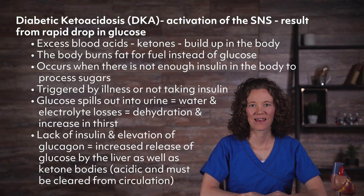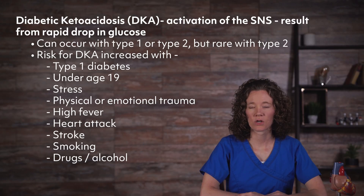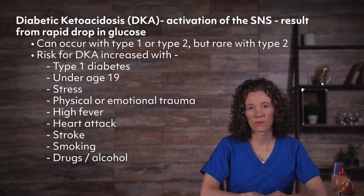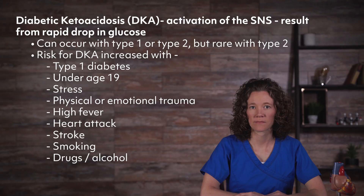The lack of insulin and corresponding elevation of glucagon leads to increased release of glucose by the liver, as well as ketone bodies, which are acidic and must be cleared from the circulation. DKA can occur in patients with type 1 or type 2 diabetes, but it is rare with type 2. Risk for DKA is increased with type 1 diabetes under age 19, stress, physical or emotional trauma, high fever, heart attack, stroke, smoking, or drugs and alcohol.